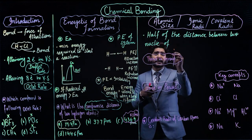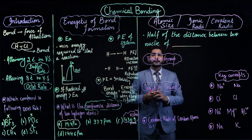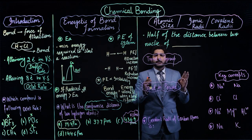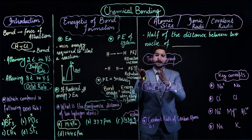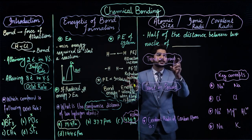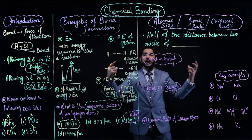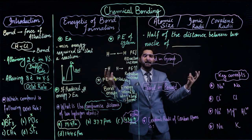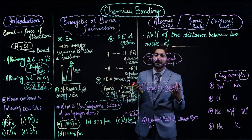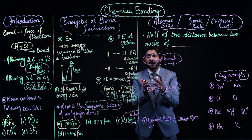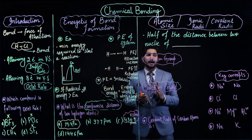For ionic radius: it is the half of the distance between the two nuclei of oppositely charged ions — one positive and one negative. For example, Na⁺ and Cl⁻: the half of the distance between them is your ionic radius.